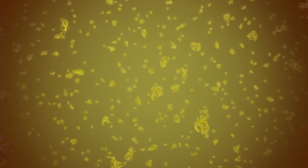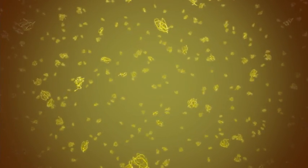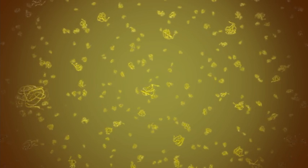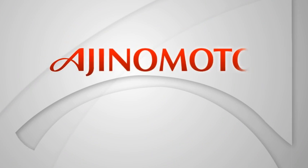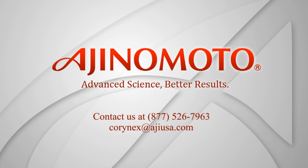Coronex produces recombinant proteins in an effective, streamlined, affordable process that is well-suited for high-volume production with minimal contaminants. Ajinomoto's innovative Coronex recombinant protein expression system: advanced science, better results. Contact us at 877-526-7963.